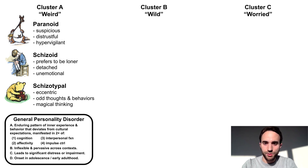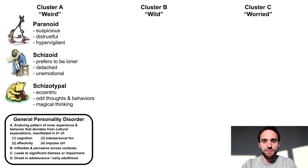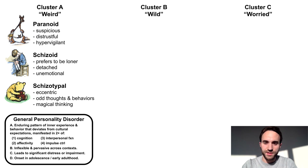Schizoid personality disorder is defined by a person who prefers to be a loner, is detached from society, and unemotional. If you think of Christopher Robin as a detached child who prefers spending his time with imaginary animal friends, then he fits this diagnosis well. Schizotypal personality disorder involves eccentric or odd thoughts and behaviors, and magical thinking — a belief in the supernatural — often involving the belief that unrelated events are connected despite the absence of a plausible causal link. The imaginative Pooh bear best fits this diagnosis.